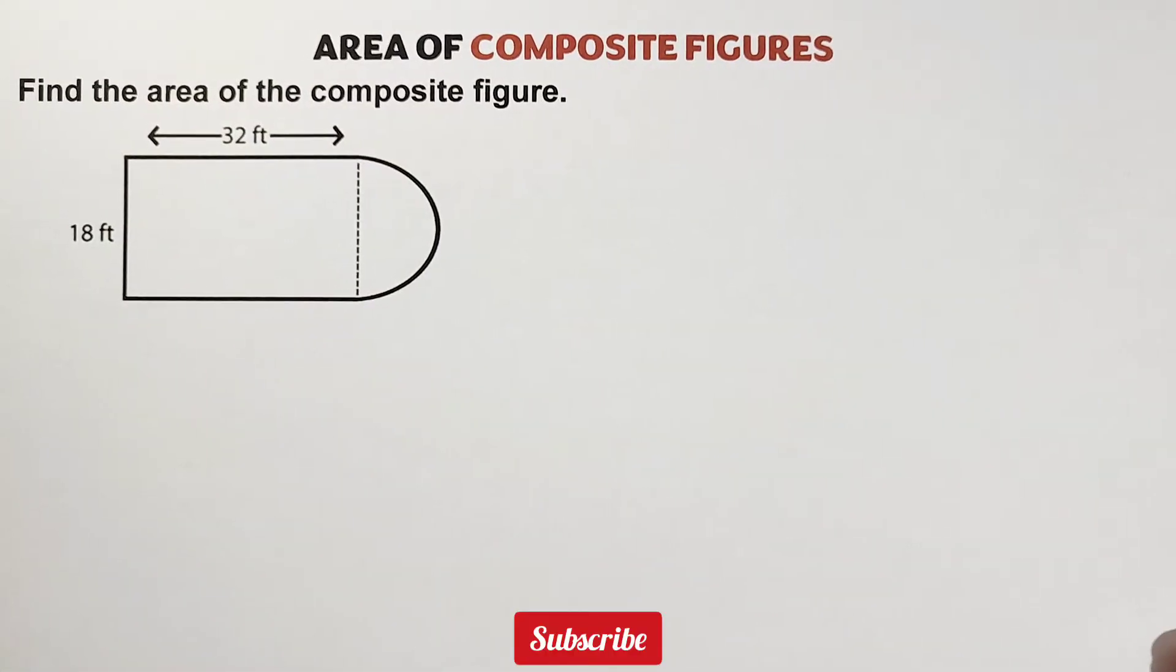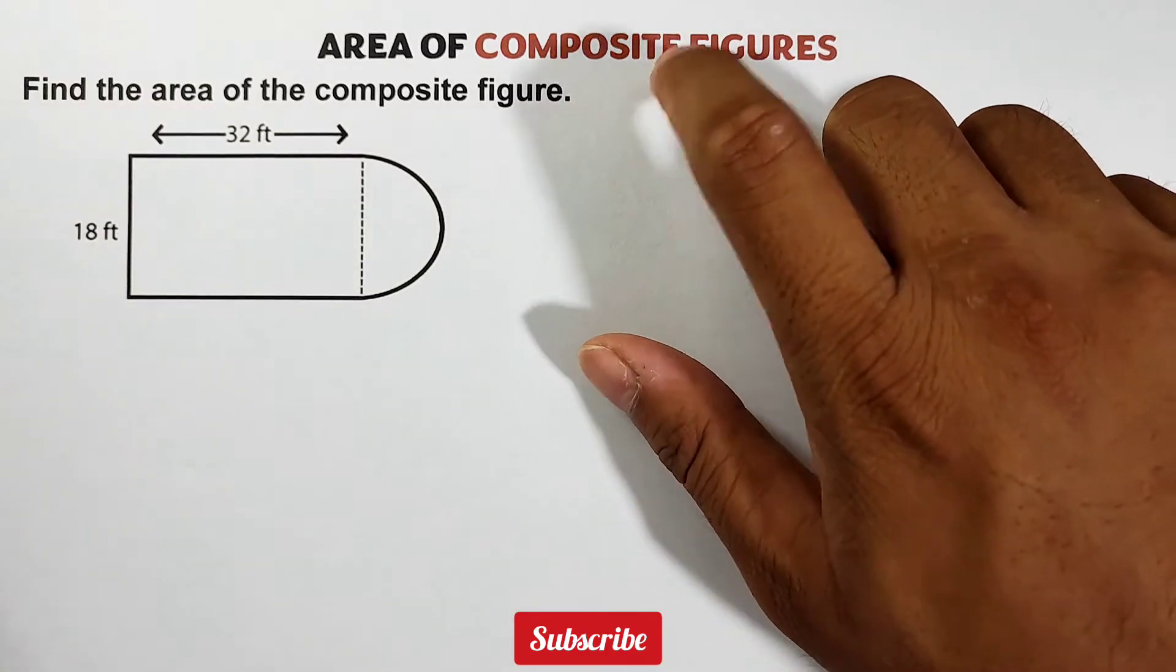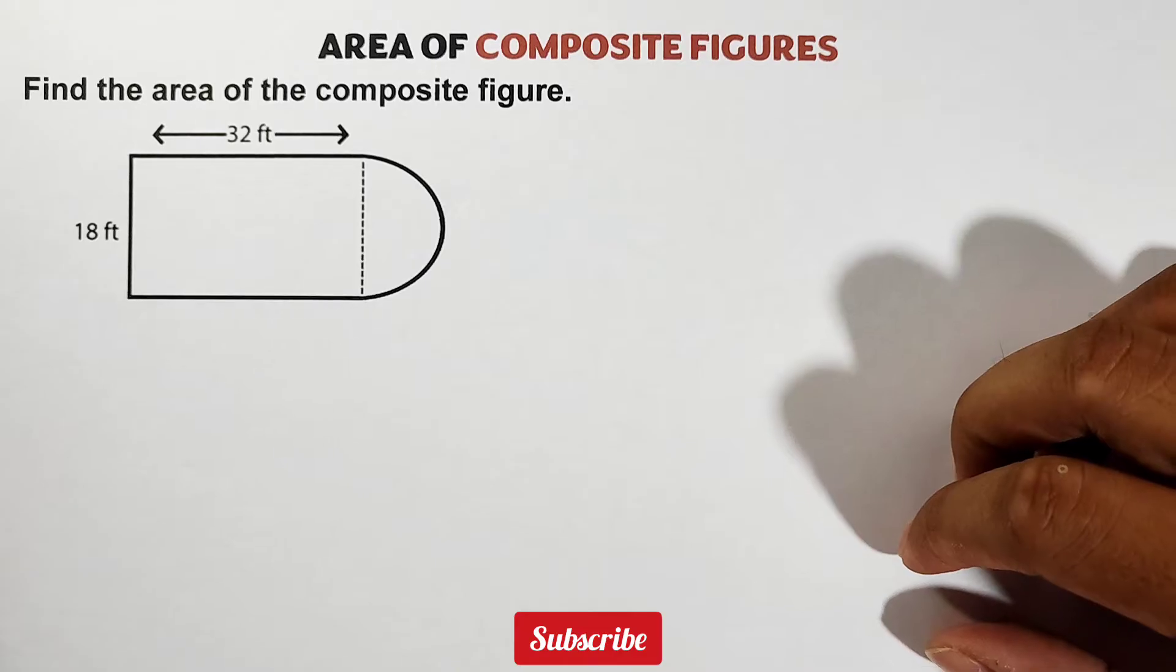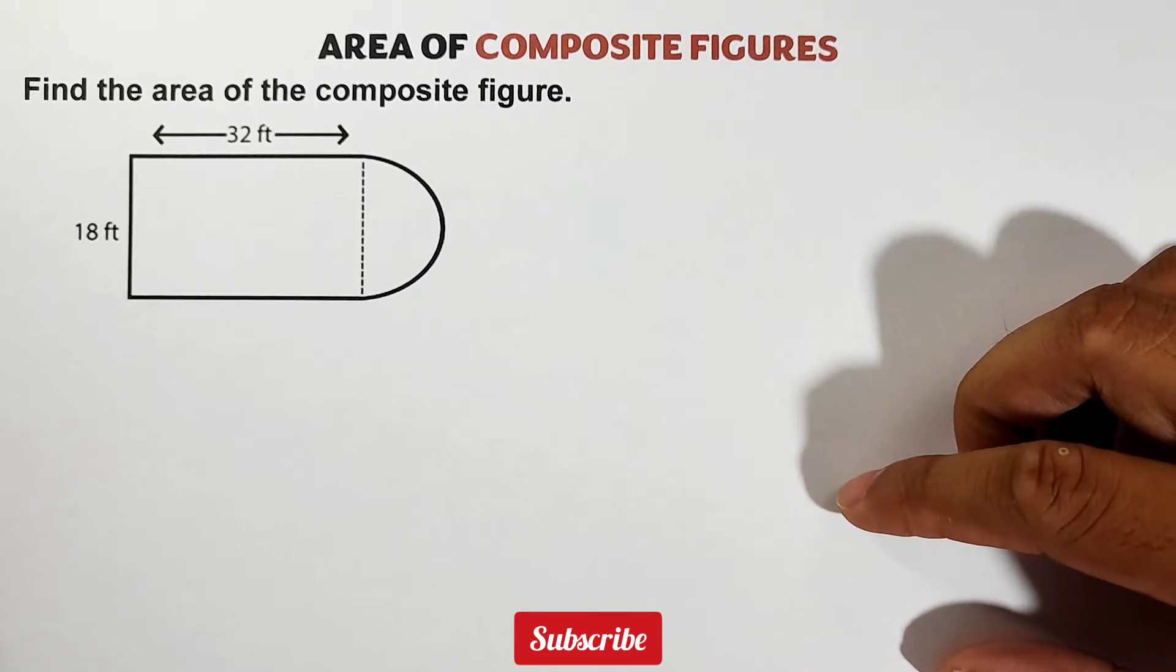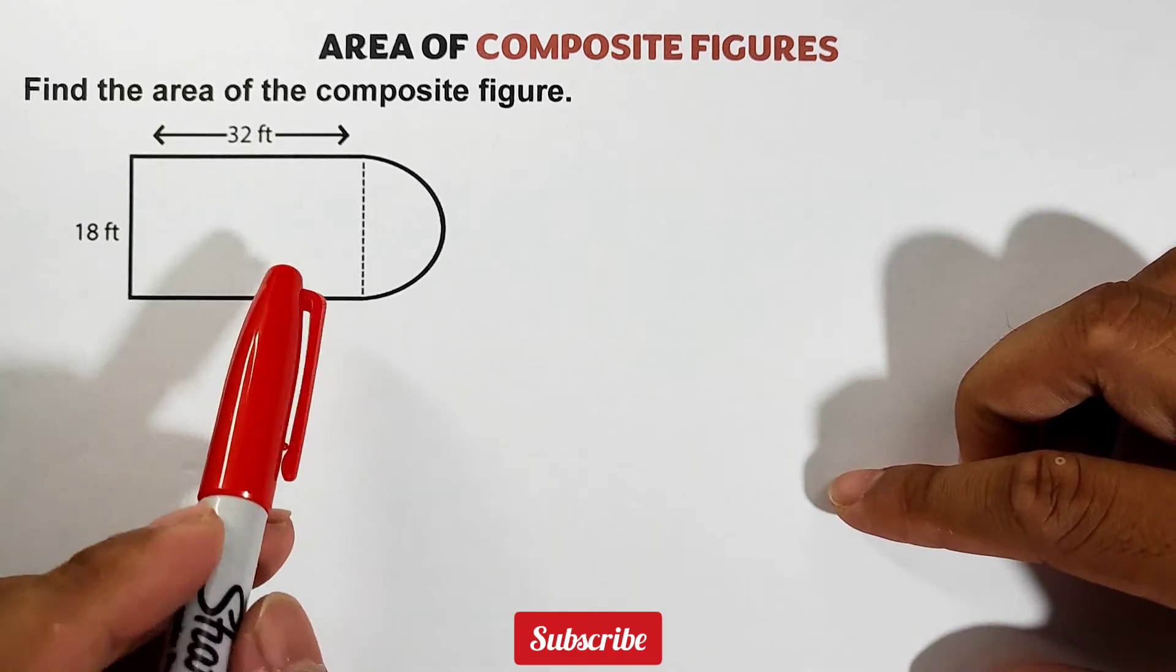So what we have here is that we will try to find the area of composite figure. And by the way guys, when we say composite figure, it is a geometric figure composed of two or more different figures in geometry. And as you can see, this one is an example of it.